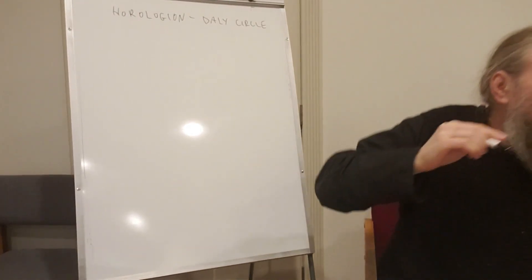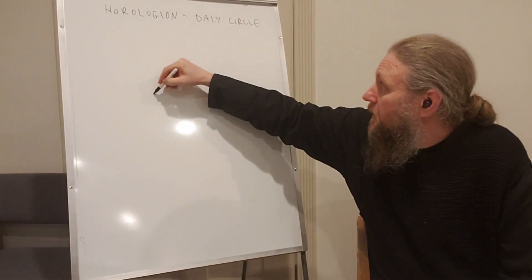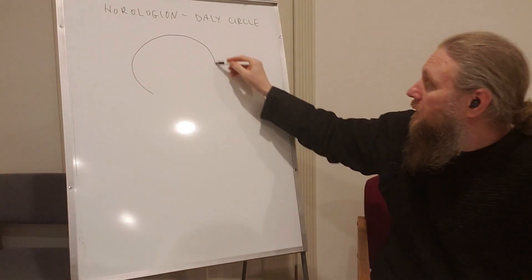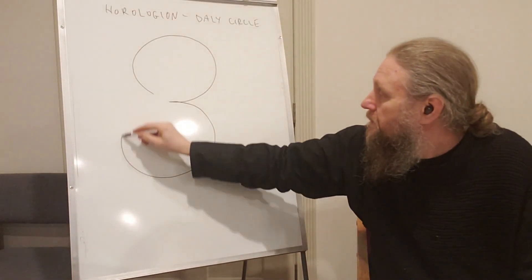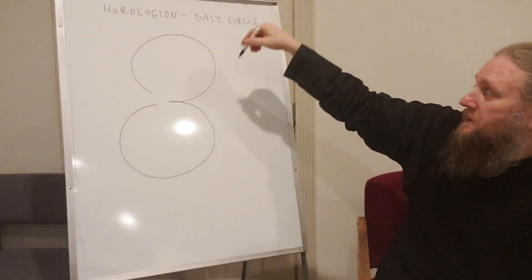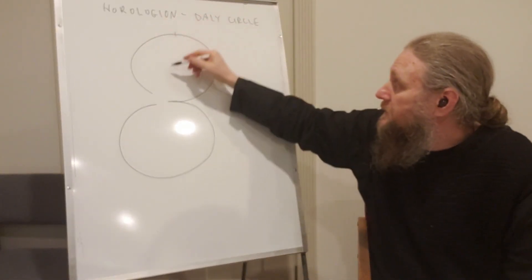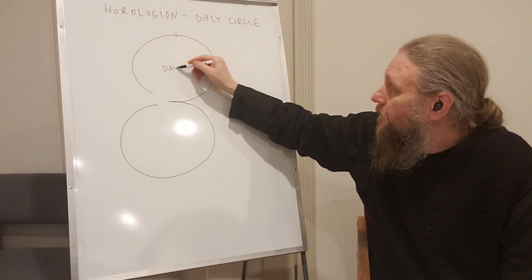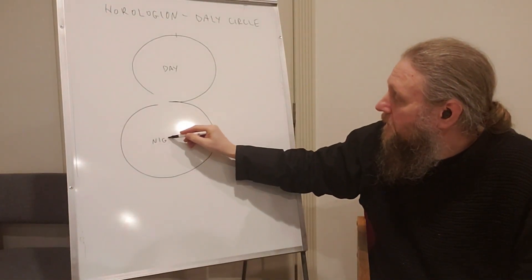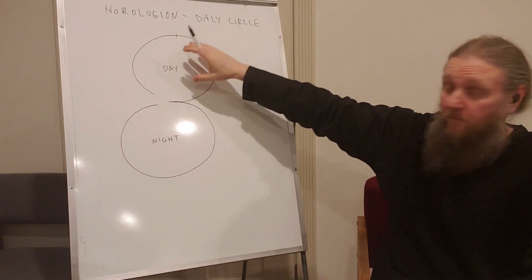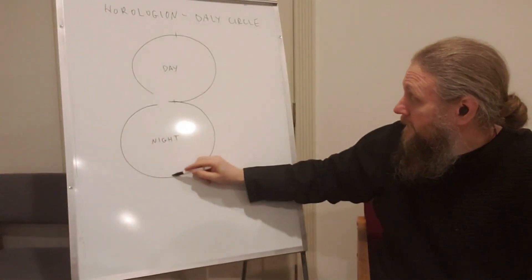We were drawing a little diagram last time and I'll try to repeat it. We're representing time like this - this is the day, and this is the night. We have 12 hours in the day and 12 hours in the night.